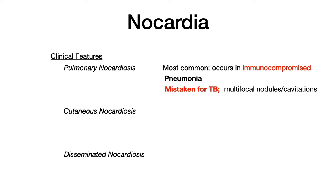So on your exam, if you're shown a chest x-ray with nodules and cavitations, you should be thinking about tuberculosis, but also keep nocardia in your differential — because both TB and pulmonary nocardiosis look very similar on imaging and you need to be able to differentiate between the two.